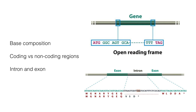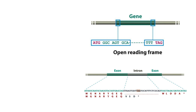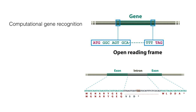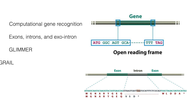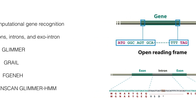Some genes can be found using examination of base composition — differences between coding versus non-coding regions. Specifically, intron and exon boundaries are found this way. There are many models developed that are good for finding genes. This is called computational gene recognition: finding exons, introns, exon-intron boundaries, etc., using a variety of gene-finding algorithms such as Glimmer, Grail, and GeneScan.